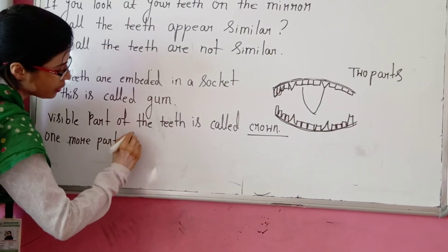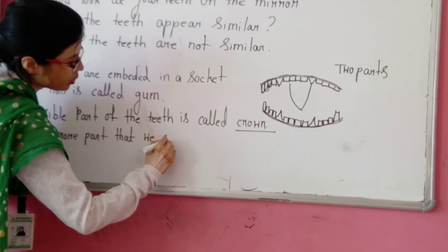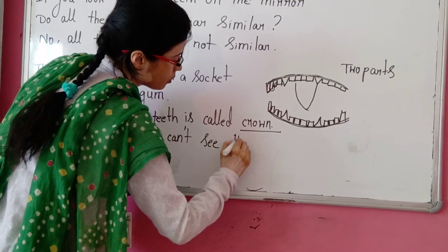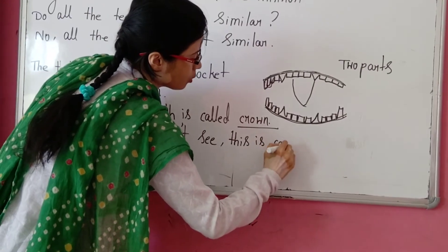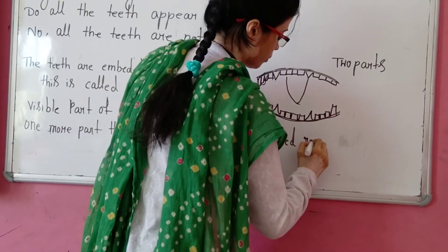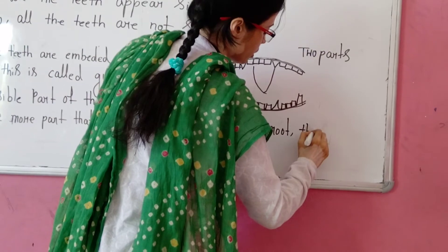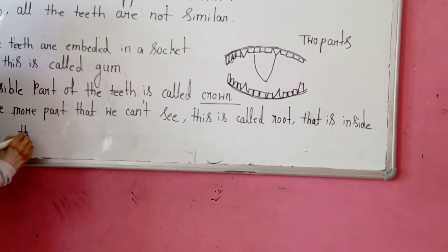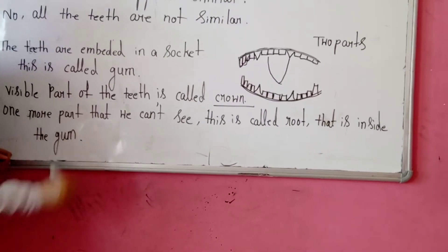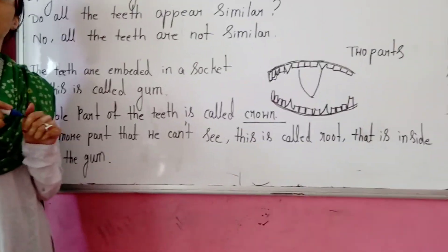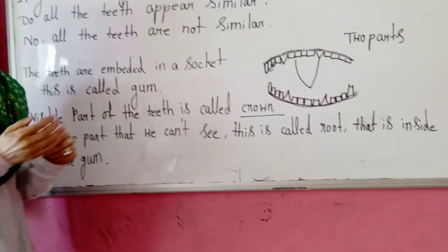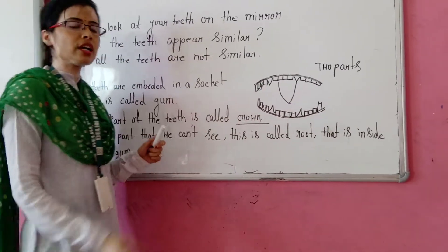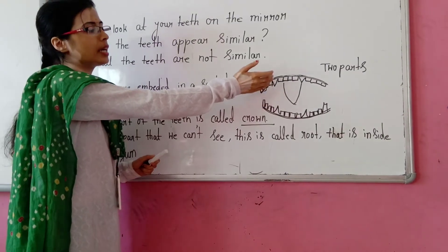The other part is the part we can't see — that is called the root. The root is inside the gum. Just like plant roots go inside the soil and we can't see them easily. So teeth have two parts: crown — the visible part above the gum — and root — the invisible part inside the gum.